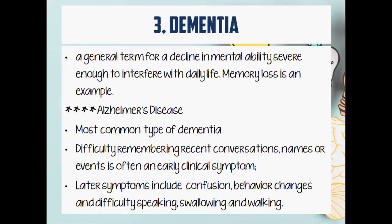Number four is dementia. This is a general term for a declining mental ability, severe enough to interfere with daily life. One classic type of dementia is Alzheimer's — you have difficulty remembering recent conversations, names, or even events in your life. In the latter part of Alzheimer's disease, it could include confusion, behavior changes, and difficulty speaking, swallowing, and walking. Practically, you will not be able to remember how to swallow food, how to walk, or how to speak.